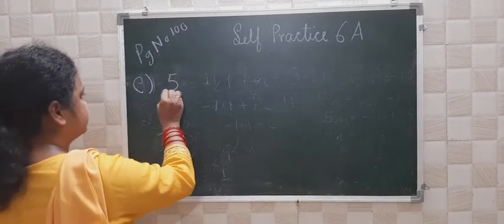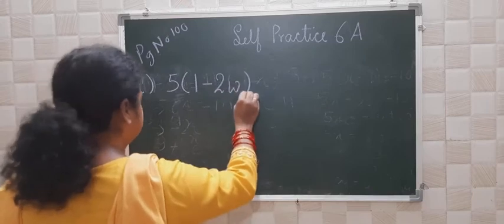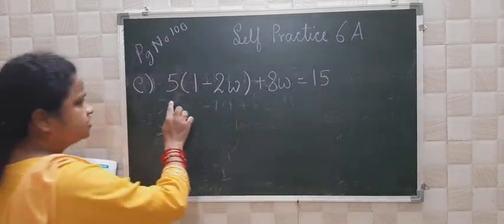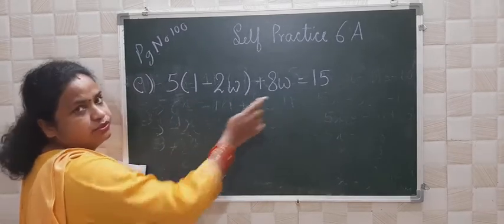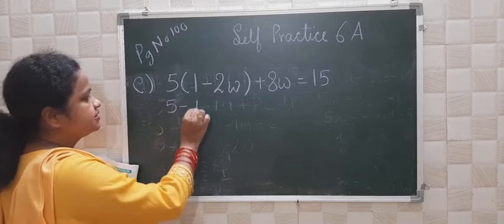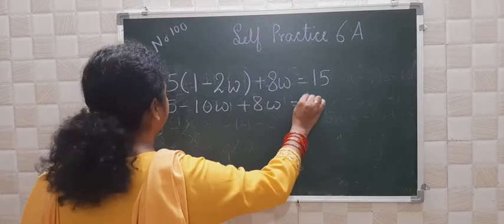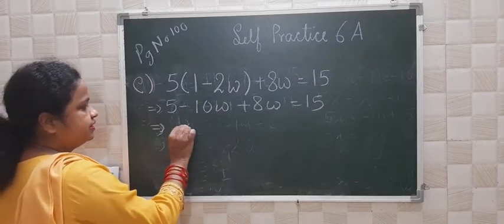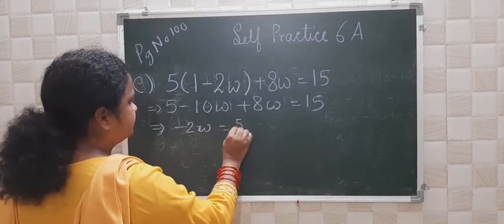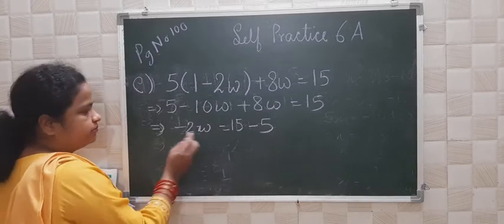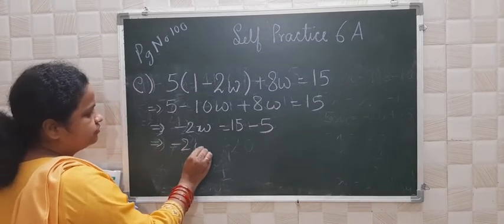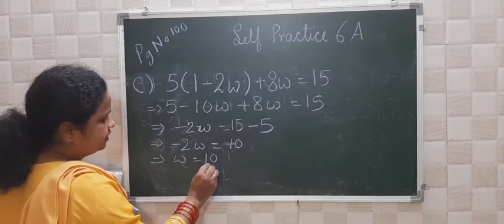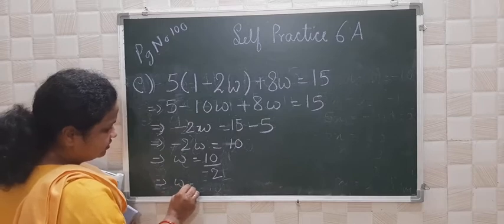Now let's solve part E. The equation is 5(1 minus 2w) plus 8w equals 15. So we will write 5 minus 10w plus 8w equals 15. So minus 10w plus 8w gives minus 2w, and 15 minus 5 gives 10. So minus 2w equals minus 10, and w equals minus 10 divided by minus 2, so w is equal to 5.